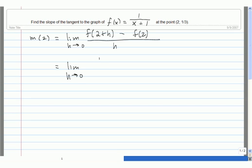So we get 1/(2+h) + 1, and then we subtract off f(2). f(2) we get by taking 2 and substituting it in for x. Then we divide the whole numerator by h.